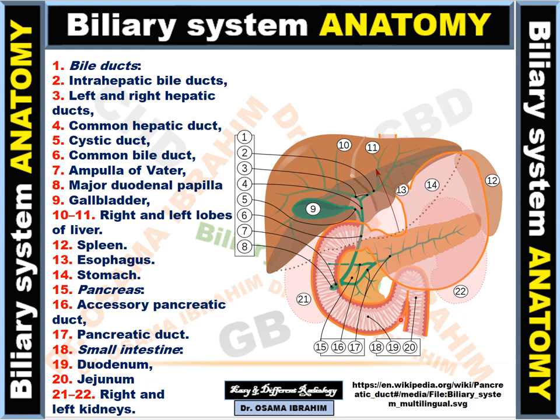This is the duodenum, this is the duodenojejunal junction, and this part is the jejunum. The GI tract segments shown are the esophagus, stomach, first part of the duodenum, second part of the duodenum, third part, and fourth part.